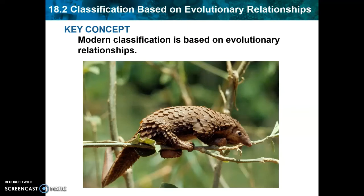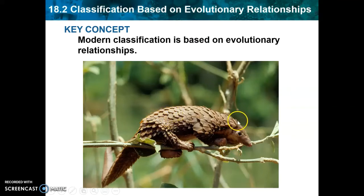Today we're talking about Chapter 18, Section 2, which is how we classify organisms based on their evolutionary relationship. It can be very difficult to classify some organisms, such as the pangolin shown here, because it has some traits that are very much mammal-like — it does have hair on its belly — but then it has all of these scales, kind of like a pine cone. Scales are not something we typically associate with mammals, so we need to investigate deeper into evolutionary relationships and come up with a classification system based on that.